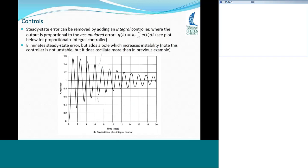We can fix the steady-state error by adding an integral controller, where the output is proportional to the accumulated error over time, not just the instantaneous error. The input tries to drive that accumulated error to zero. The steady-state error goes away, but notice there are a lot more oscillations and it takes much more time to settle down. This controller adds a pole which increases instability — the system is less stable with more oscillations and a longer settling time.